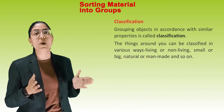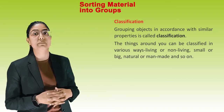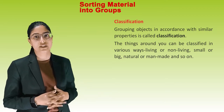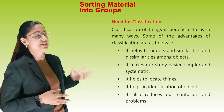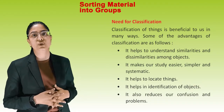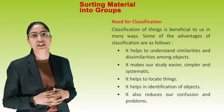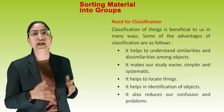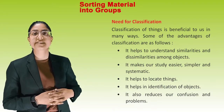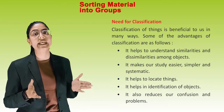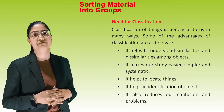Grouping objects in accordance with a similar property is called classification. The things around you can be classified in various ways — living or non-living, small or big, natural or man-made, and so on. Classification is beneficial to us in many ways: it helps to understand similarities and dissimilarities among objects, makes our study easier, simpler and systematic, helps to locate things, helps in identification of objects, and reduces our confusion and problems.